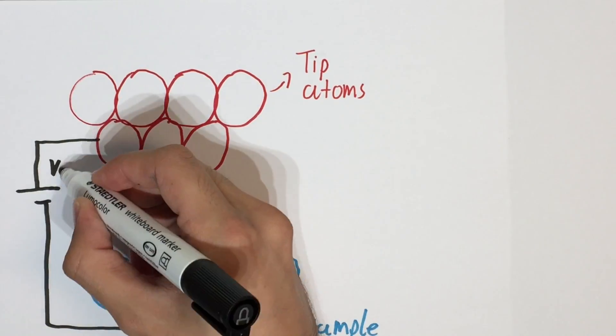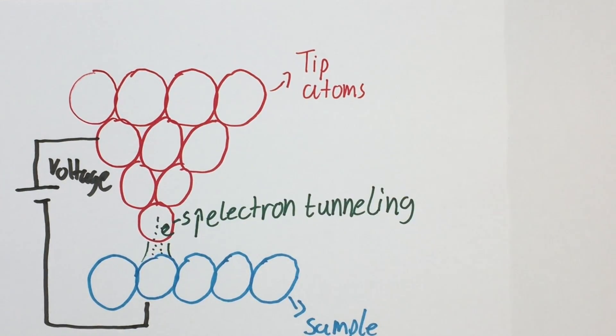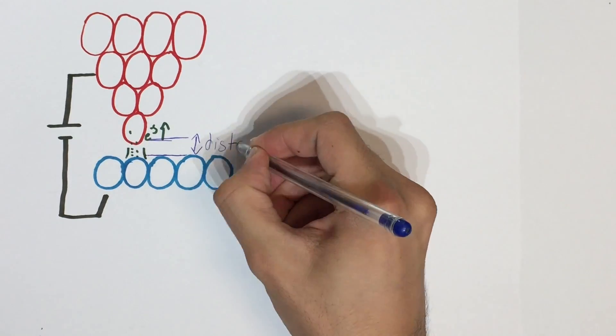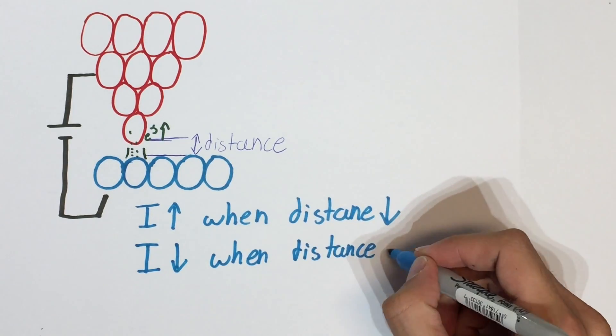By applying a voltage at the tip of the probe and the sample, a flow of current between the two is observed as electrons tunnel from the sample to the tip. The current is increased when the tip is closer to the atom and decreased when the distance between them is larger.